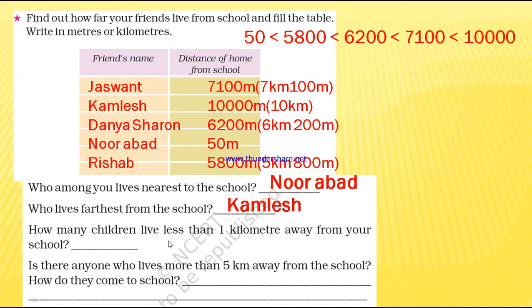How many children live less than 1 kilometer away from school? Less than 1 kilometer — we have the measures written in kilometers here: 7 km, 10 km, 6 km, 5 km. Who is living less than 1 kilometer away from school? Of course, only one — that is Noorabad. They asked how many children; the answer is only one child, Noorabad.